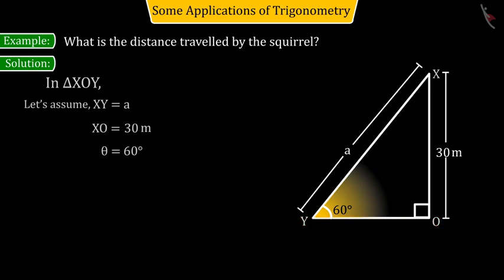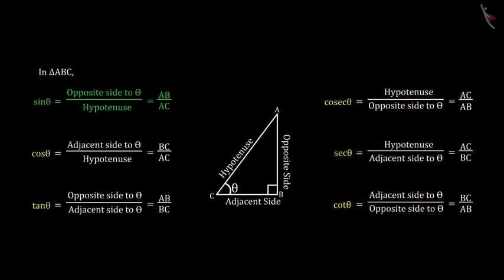To move further, if you use a trigonometric ratio in the right-angled triangle, then from the given information, can you tell which ratio would be suitable here?